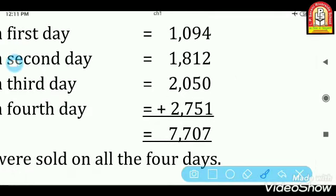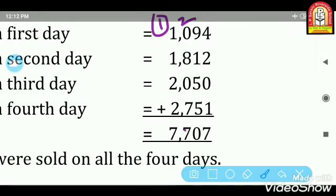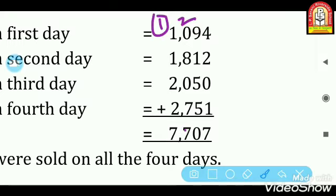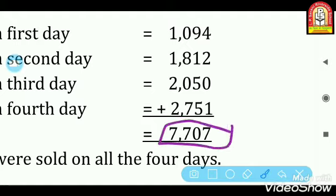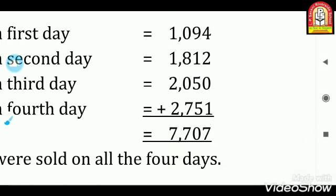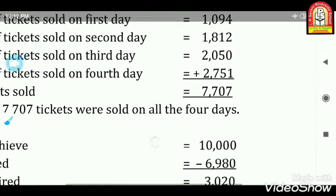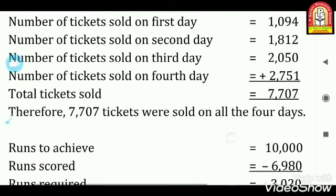Adding the units: 4+2+0+1 = 7. Tens: 9+1+5+5 = 20, write 0 carry 2. Hundreds: 2+8+0+7 = 17, plus carry 2 = 19, write 9 carry 1. Wait — continuing the addition step by step: the final answer is 7,707 tickets sold over all four days.